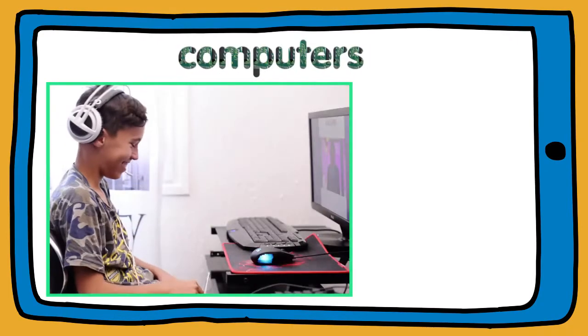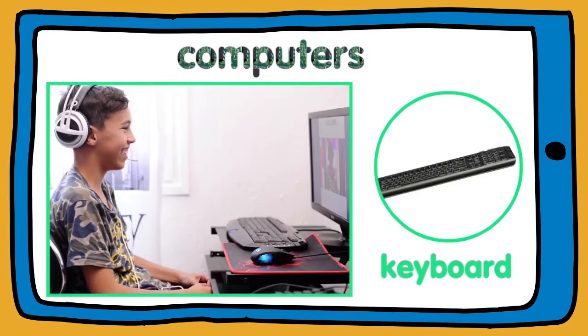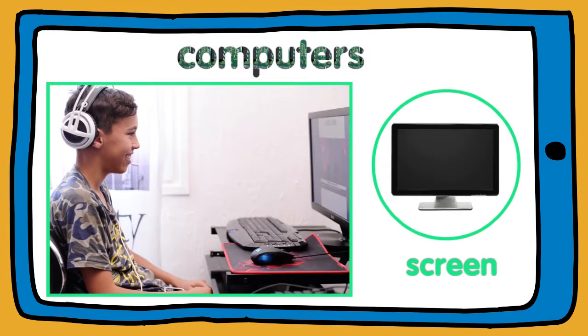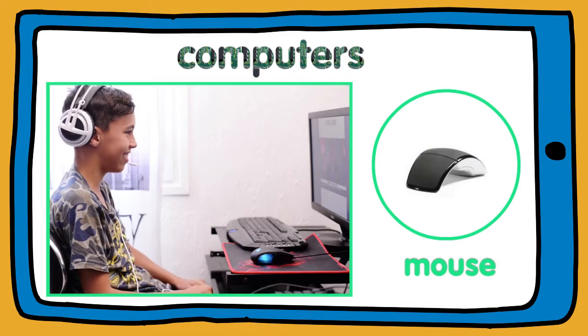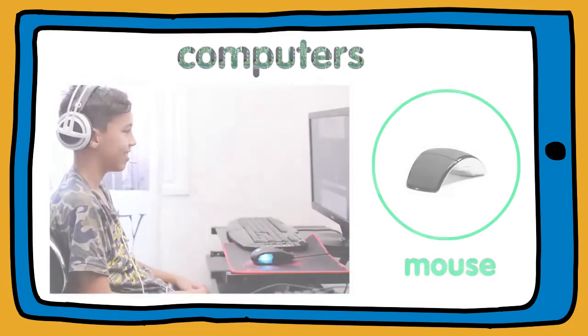Computers have got a keyboard, a screen and a mouse. You use a mouse to click on the screen.